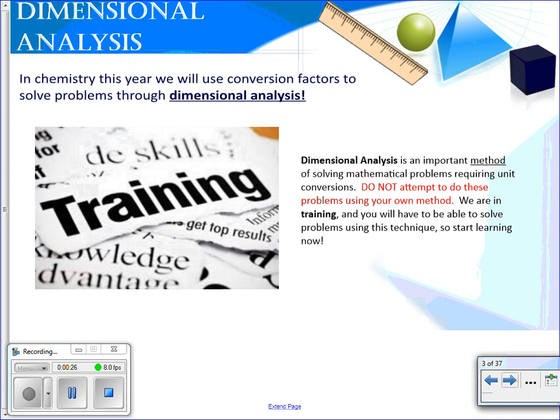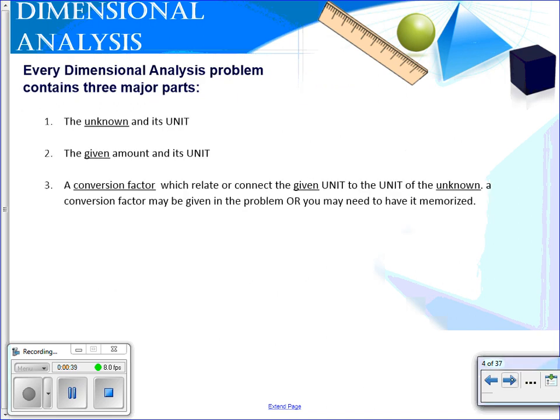So in chemistry this year we will use conversion factors to solve problems using dimensional analysis. It's important that you use dimensional analysis. Do not attempt to do these in any other way. You will receive points and credit for using dimensional analysis. So be sure to pay special attention and set up your problems the way I am showing you. Every dimensional analysis problem contains three major parts: the unknown unit, a given amount, and then you're going to make use of these conversion factors. Conversion factors could be given to you in the problem or they could be things that you need to know off the top of your head or out of your memory.